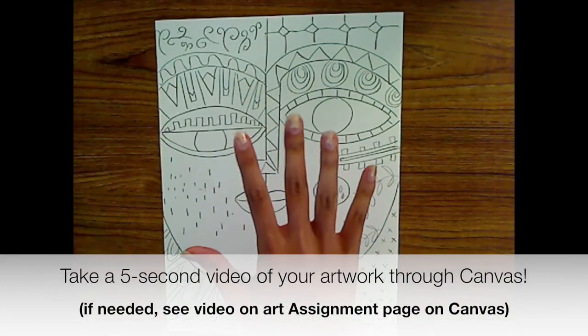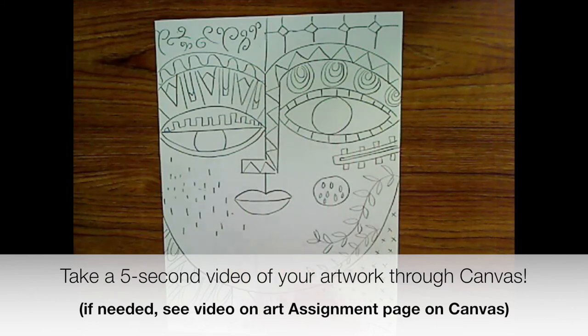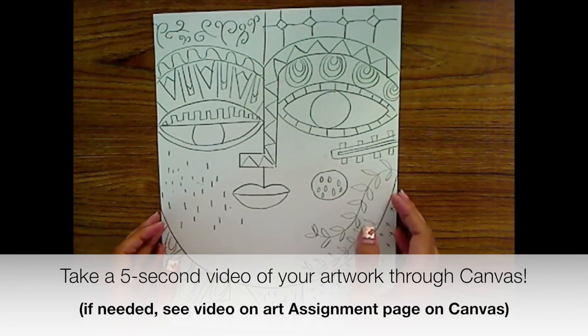I know in previous weeks I said to take a picture of it with your phone or your Chromebook, but I realized I was a little bit confusing and a little bit complicated because you had to find it in another folder and whatnot. So taking a five second video is all done within Canvas. If you do not know how to do that or you did it last time but you need help remembering how to do it, there should be a video on this week's assignment page that you can watch. So go to the assignment page, click on that video, watch how to take a five second video of it and upload it to this week's assignment.